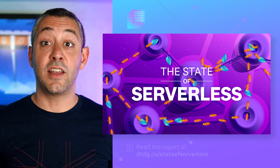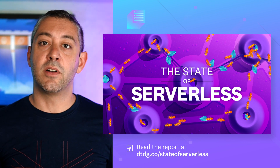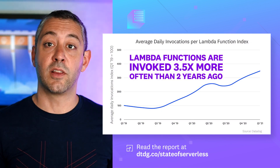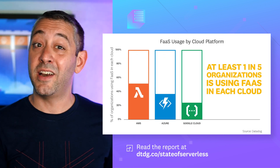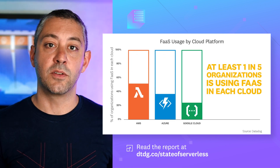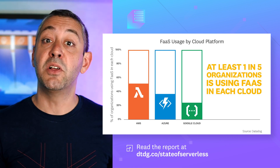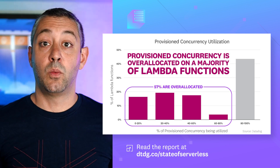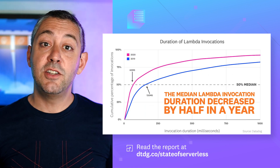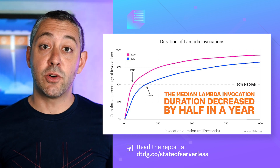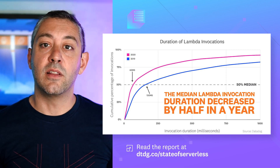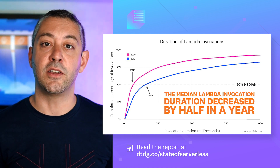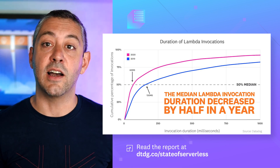Check out our recent updates to the State of Serverless report. Serverless has gained traction among organizations of all sizes, from cloud-native startups to large enterprises. With serverless, teams can bring ideas to market faster without managing infrastructure and paying only for the resources they use. In this report, we analyzed millions of functions run by thousands of companies to understand how serverless is being used in the real world. Did you know that Lambda invocations are much shorter today than just a year ago? In 2020, the median Lambda invocation took just 60 milliseconds, which is half of the previous year's value. Check out the full report for more exclusive data on the State of Serverless.